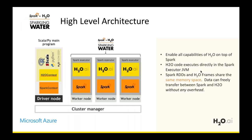Looking at the Sparkling Water architecture: In a Spark cluster, the driver node holds the Spark context, which assigns work to worker nodes running Spark executors. In Sparkling Water, the H2O context runs on the same driver node as the Spark context, and H2O executors run inside the same JVM as Spark executors. This means the H2O DataFrame and Spark RDD or DataFrame share the same memory space, making data transfer between H2O and Spark extremely cheap and efficient.